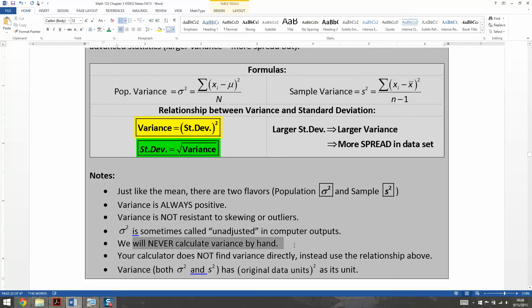All right, and then what else? We will never calculate variance by hand. Now, the calculator doesn't calculate variance directly, but it does find it indirectly, namely, it finds the standard deviation. Then we can use the relationship that the variance is the standard deviation squared to find the variance.